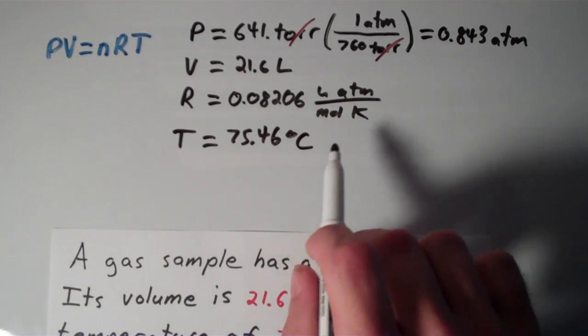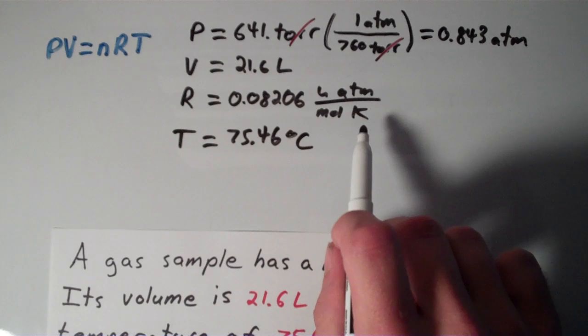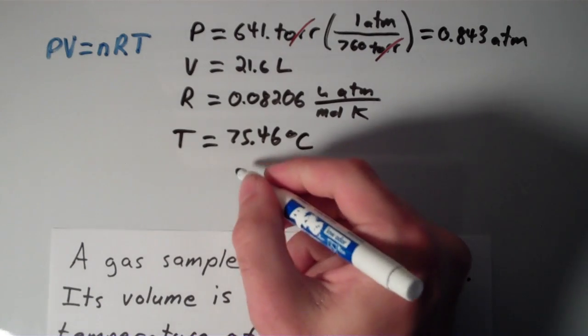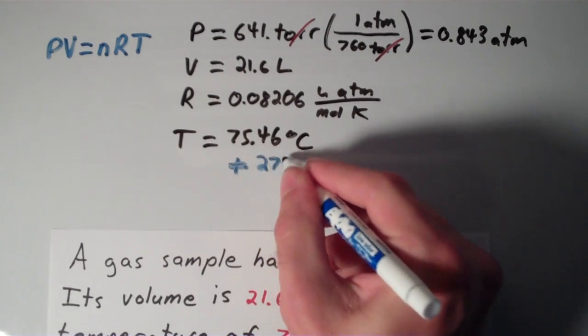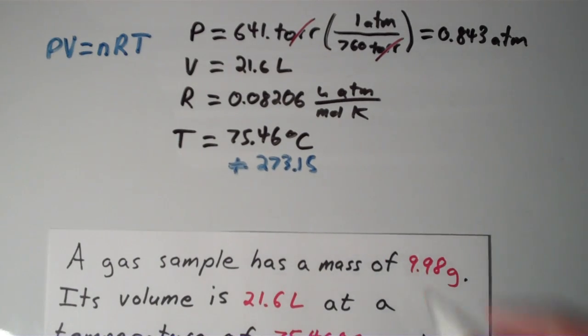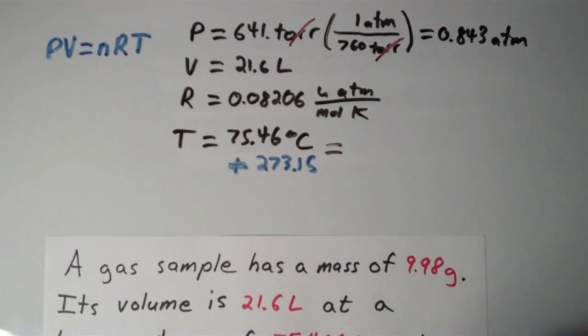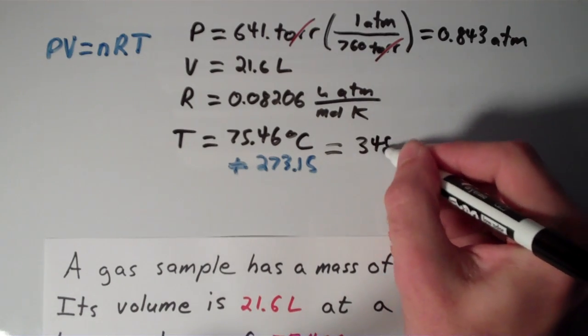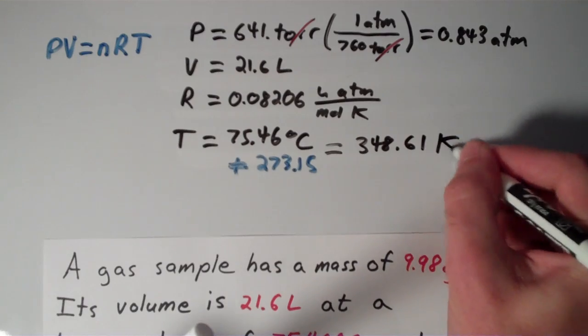And our gas constant, once again, has different units. It has kelvins. So to get 75.46 degrees Celsius in kelvins, we're simply going to add 273.15. And that result is going to give us 348.61 kelvins.